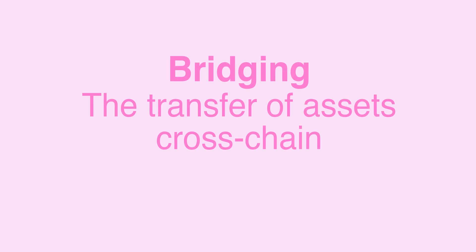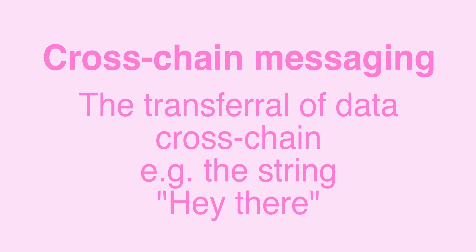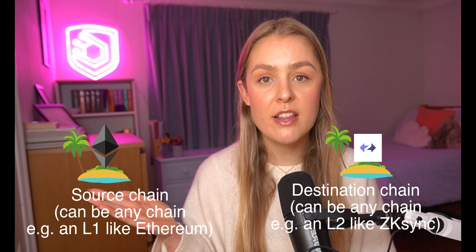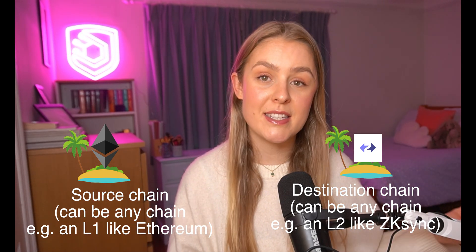There's a bit of terminology here. We've got bridging, which typically refers to cross-chain transfers of tokens — moving tokens cross-chain. And then there's cross-chain messaging, which is any arbitrary data — it could be tokens, but that's more specific. Any arbitrary data, message, or tokens sent cross-chain is cross-chain messaging. Bridging is a type of cross-chain messaging where you're sending specifically tokens. When we talk about bridging, we're taking funds from one chain to another. We refer to the chain we're taking funds from as the source chain, and the chain we're taking funds to as the destination chain.